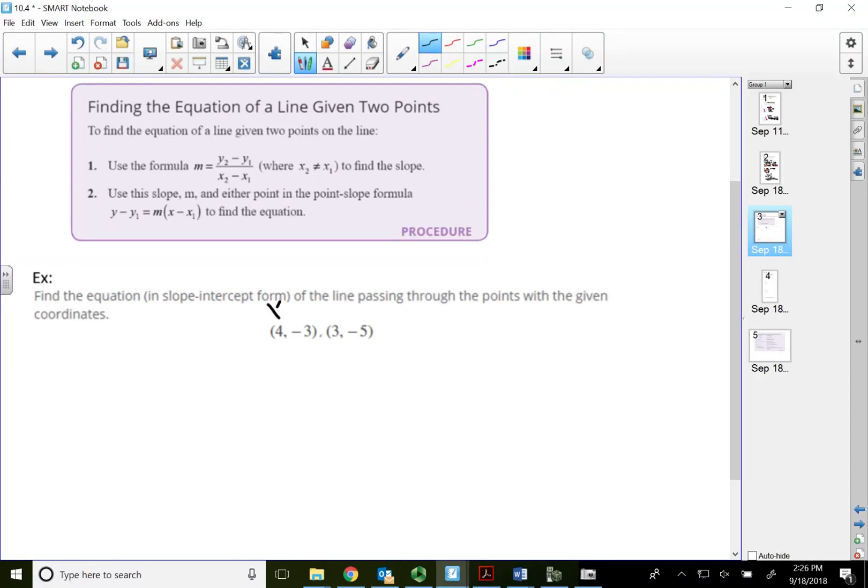So I'm going to just say the first point is x1, y1, second point x2, y2. So let's substitute them into the slope formula. Alright, the slope formula says y2 minus y1 over x2 minus x1. So y2 is negative 5, got to subtract y1. So y1 is negative 3, so we got to subtract negative 3. Alright, x2 is 3 minus x1 is simply 4.